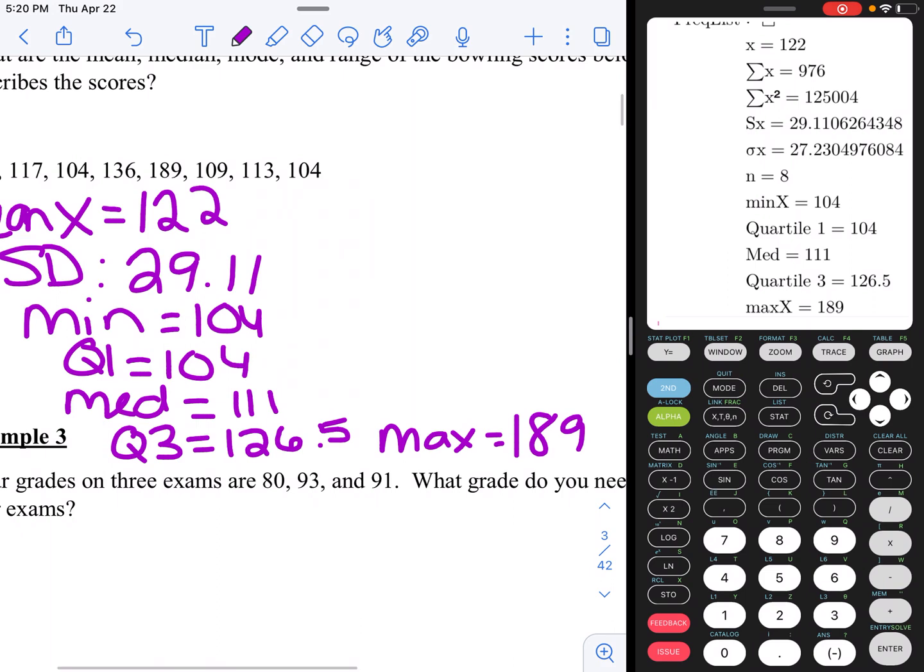So all that data is given to us right there. From there, we can find the range, max minus min. We can find the IQR, Q3 minus Q1. The only one that it doesn't provide us with is the mode. The mode is something you can see from your list of data. Remember, mode is the most frequently used number in the list. So that's how we would type in information for just a set of numbers, data points.